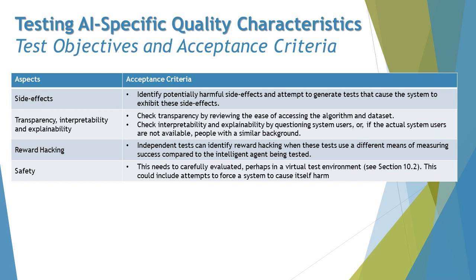Reward hacking is another quality characteristic. Independent tests can identify reward hacking when those tests use a different means of measuring success compared to the intelligent agent being tested. Reward hacking is essentially how a computer works against you — the AI looks at your moves and starts playing smartly, trying to exploit the reward signal.